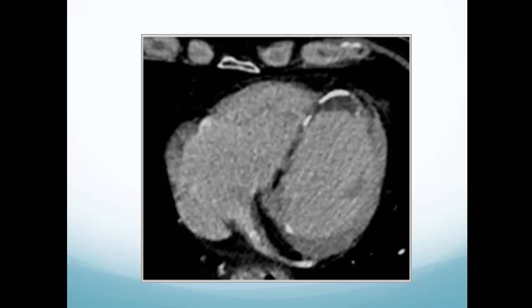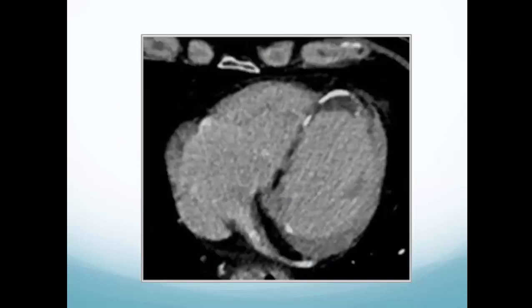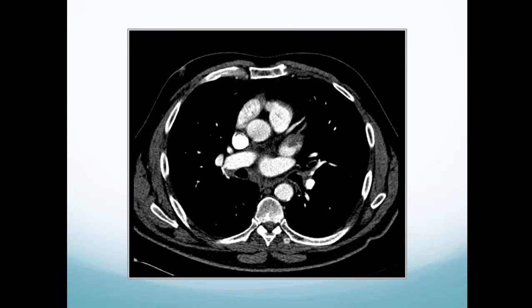For example, a hypoechoic structure adjacent to calcified infarcted myocardium with a crescentic shape is more likely to be a thrombus — because of the context, the setting adjacent to a calcified infarct, and the crescentic morphology. You can be fairly confident this is a thrombus.